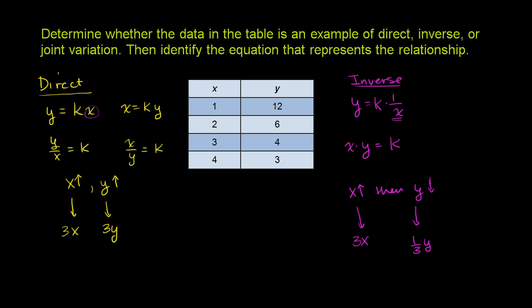Now finally, they talk about something called joint variation. And this one you won't necessarily see in an introductory algebra course. But joint variation deals with more than one variable. So if I told you that area of a rectangle is equal to the width times the length, this is an example of joint variation.